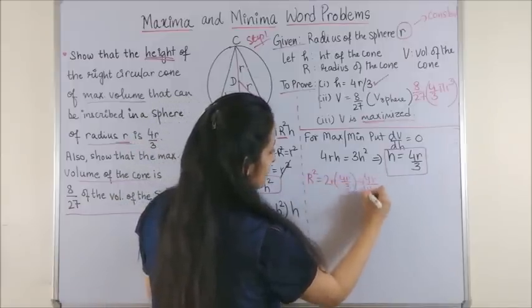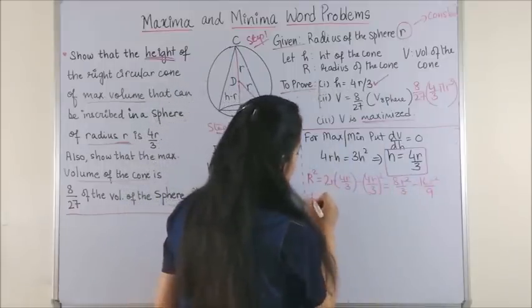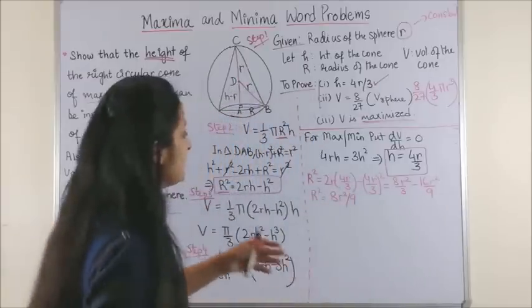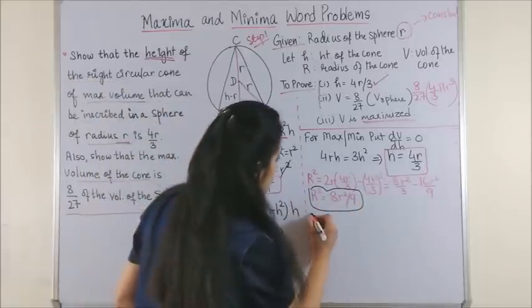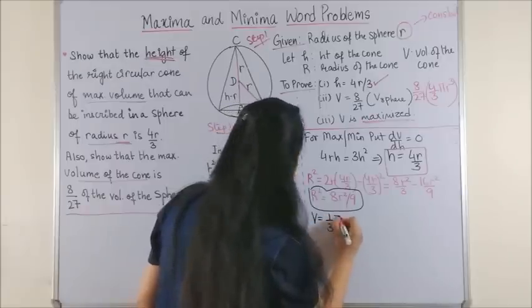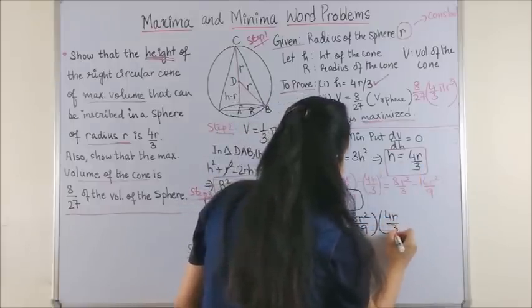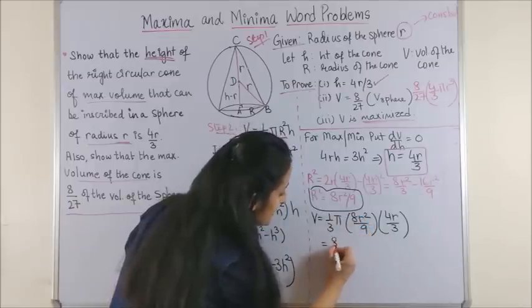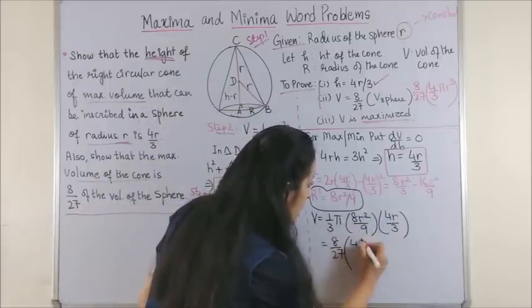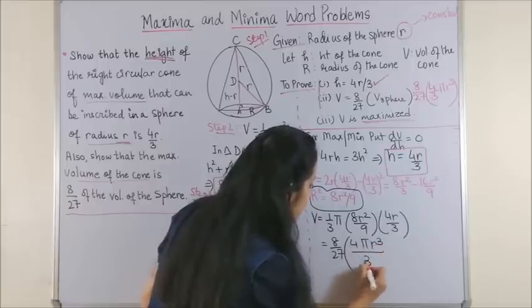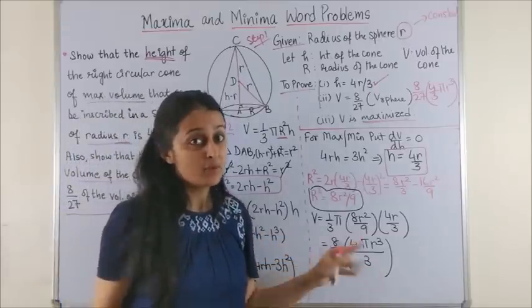Which on simplifying gives us 8r square by 9. Now let's substitute the values of h and R square in volume. So we get volume is equal to 1 by 3 pi, R square is 8r square by 9, and h is 4r by 3. So now let's see, we are anyway interested in 8 by 27, which we take it out. And now after taking that out, what are we left with? We are left with 4 pi r cube by 3.